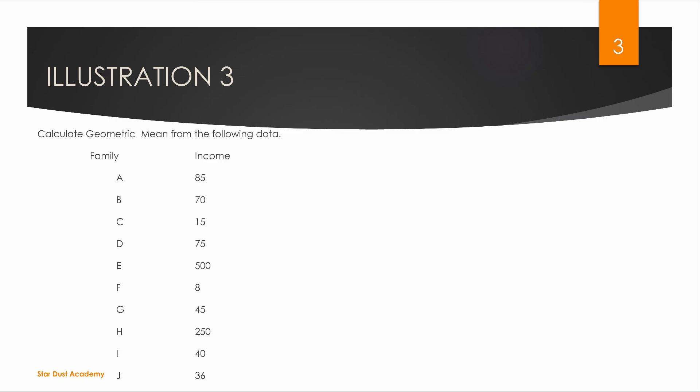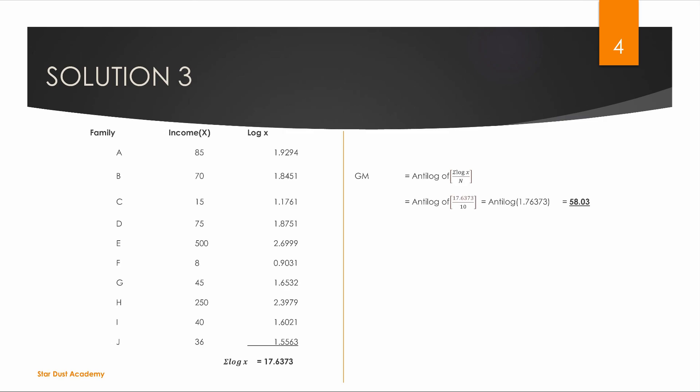Now let's work through this. We have our data: family and income. Now let's take the logarithm values. The log of 85 is 1.9294. Now we have 70, so the log of 70 is 1.8451.